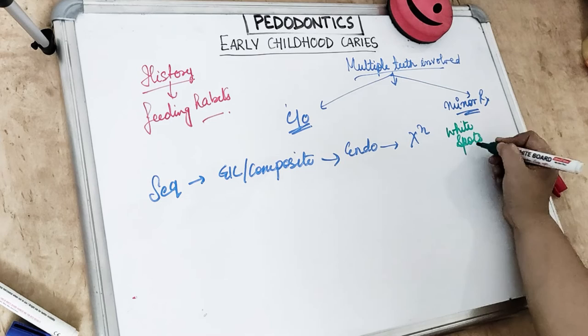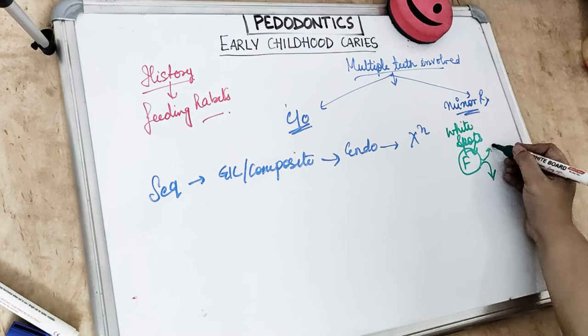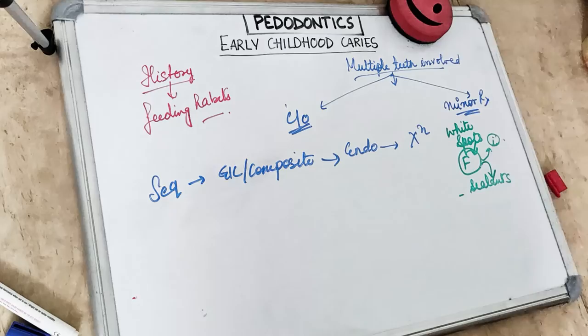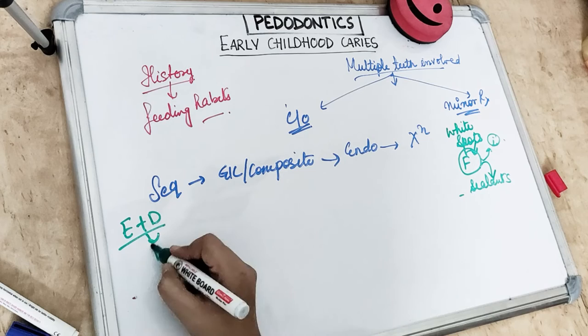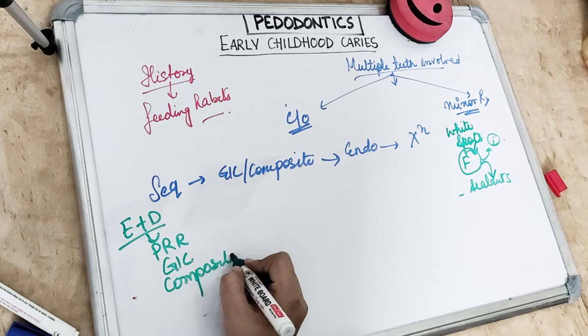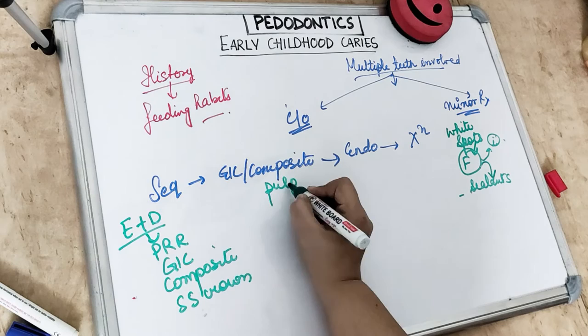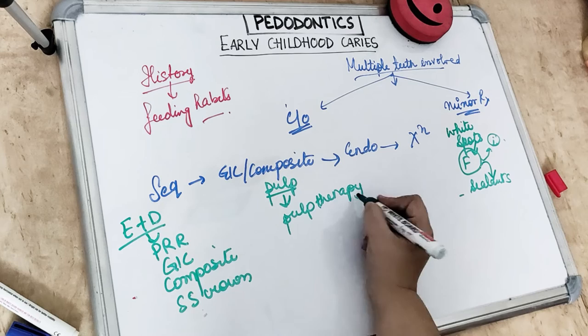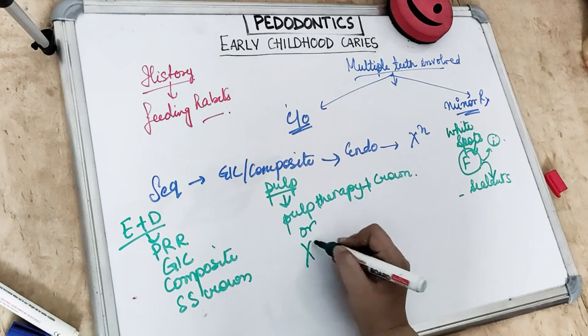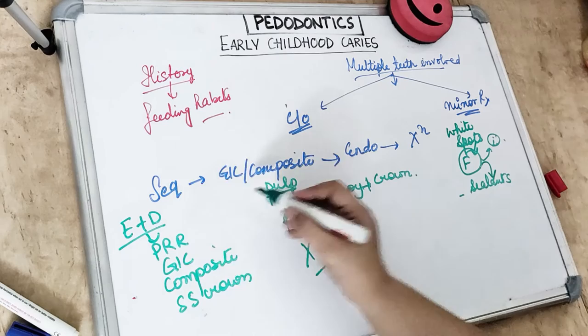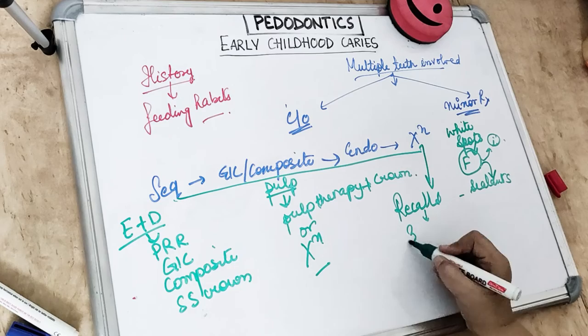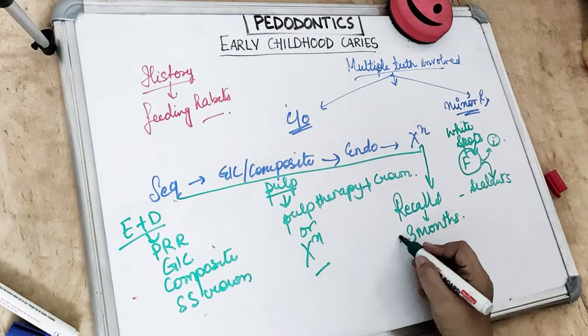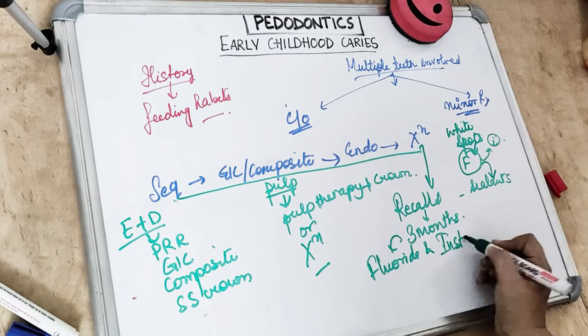If incipient or white spot lesions are present, treat with topical fluoride application or fissure sealants. For caries lesions in enamel and dentine, provide preventive resin restoration, GIC restoration, or composite restoration. A stainless steel crown is given for extensive caries. If pulpal involvement is present, pulpal therapy with full coverage coronal restoration should be given, and sometimes exodontia with space management. Patients should be recalled at three months, with examination, radiograph, fluoride application, and oral hygiene instructions.